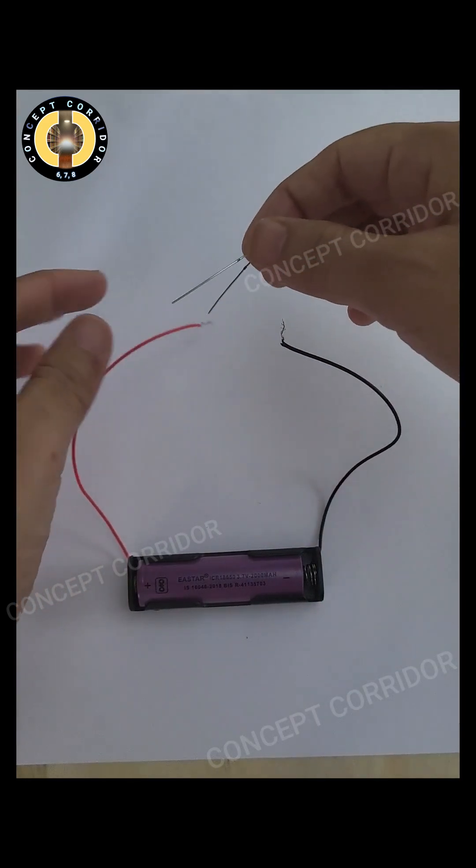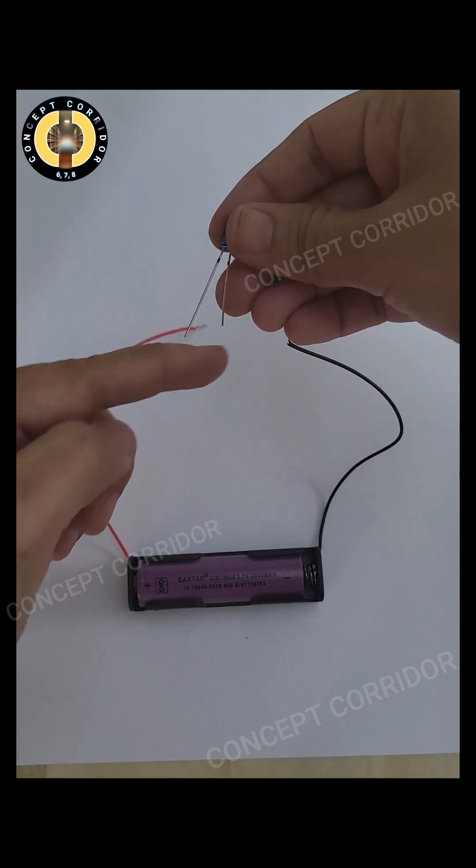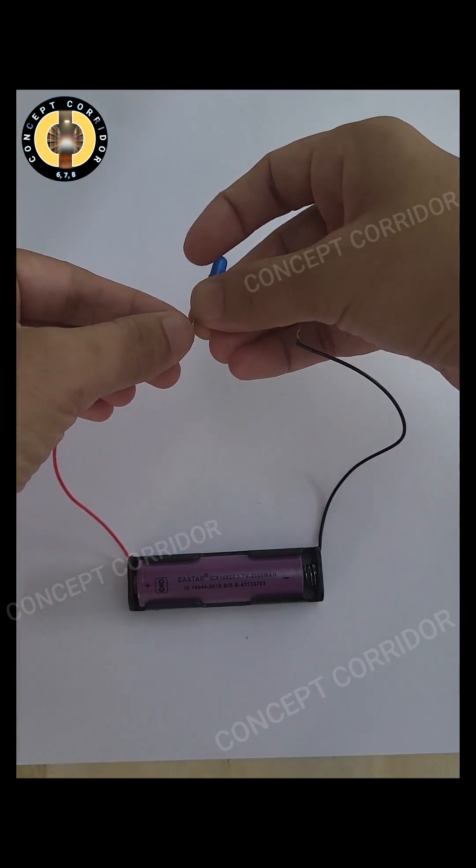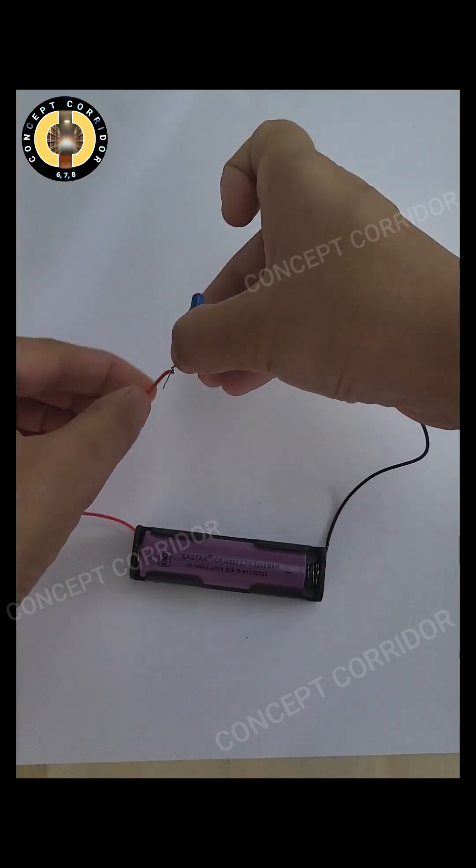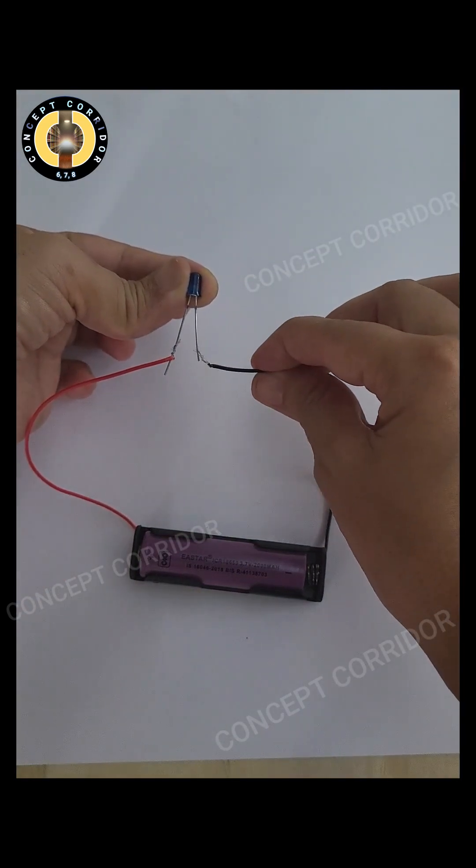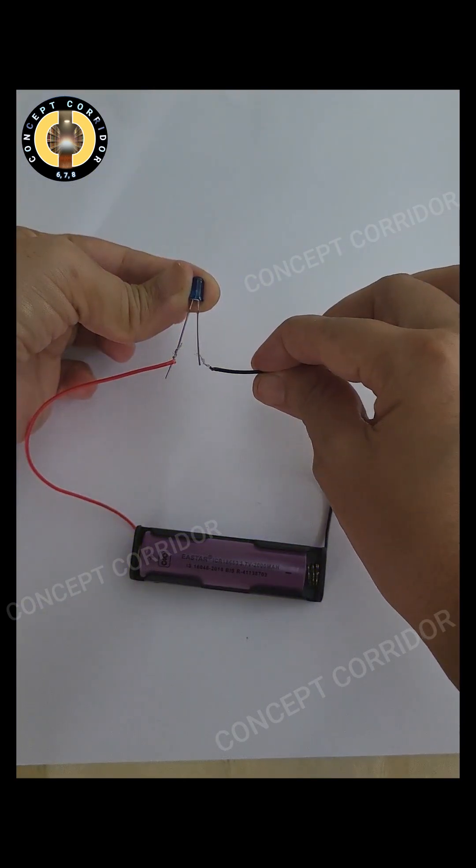Now, let's change the terminal. Here, I am joining the positive terminal of the battery to the longer wire of LED, that is the positive terminal of LED, and negative terminal of the battery to the shorter wire of LED. You can see now, LED is glowing.